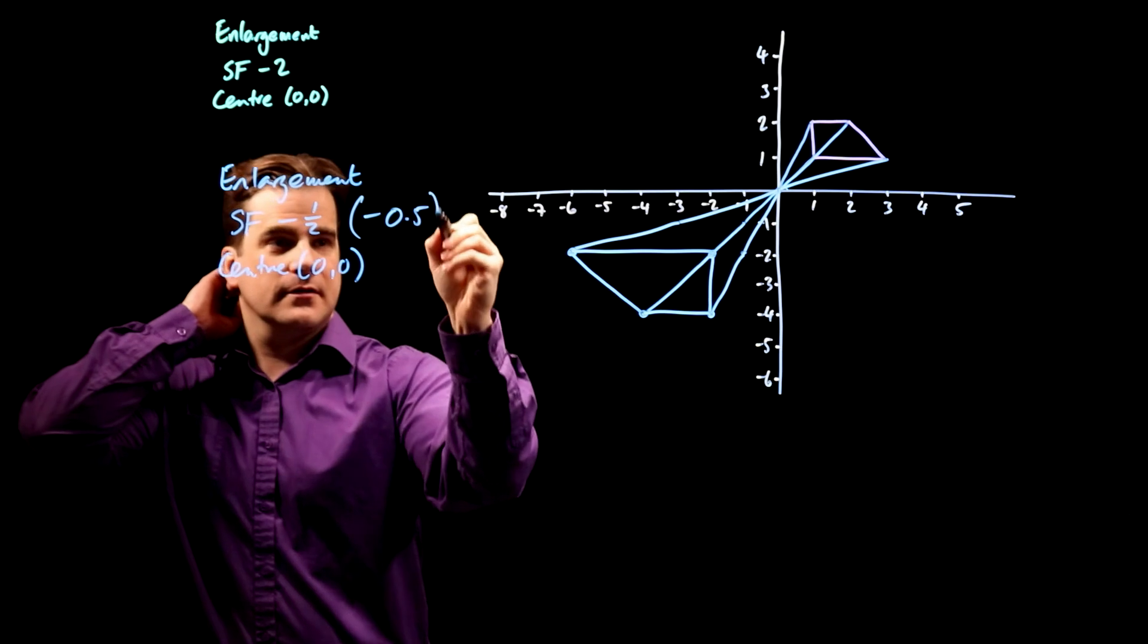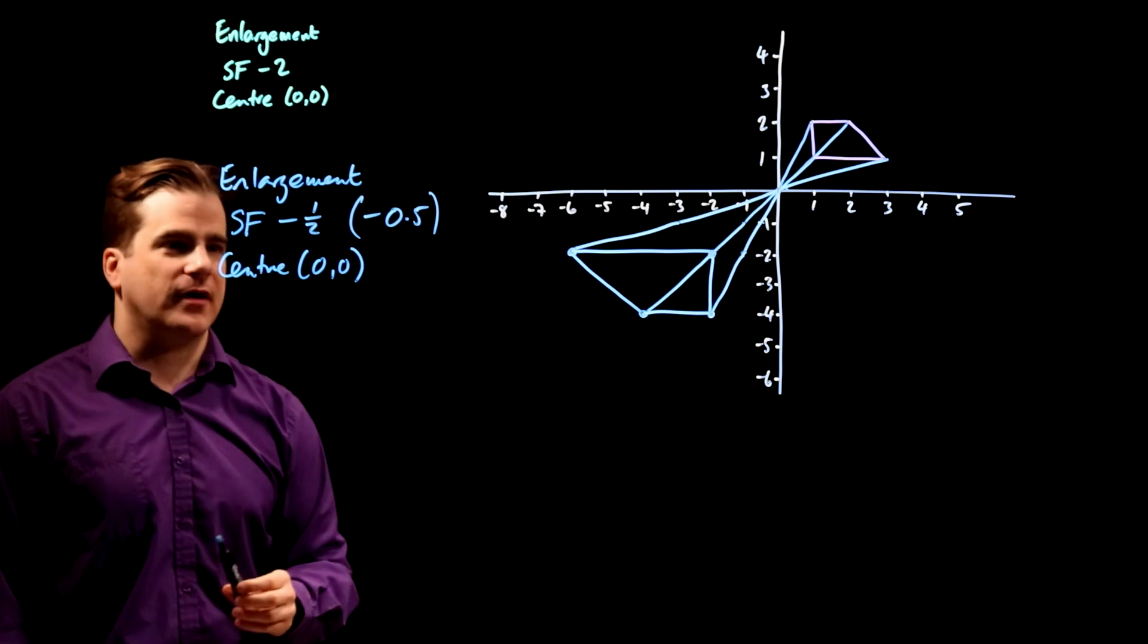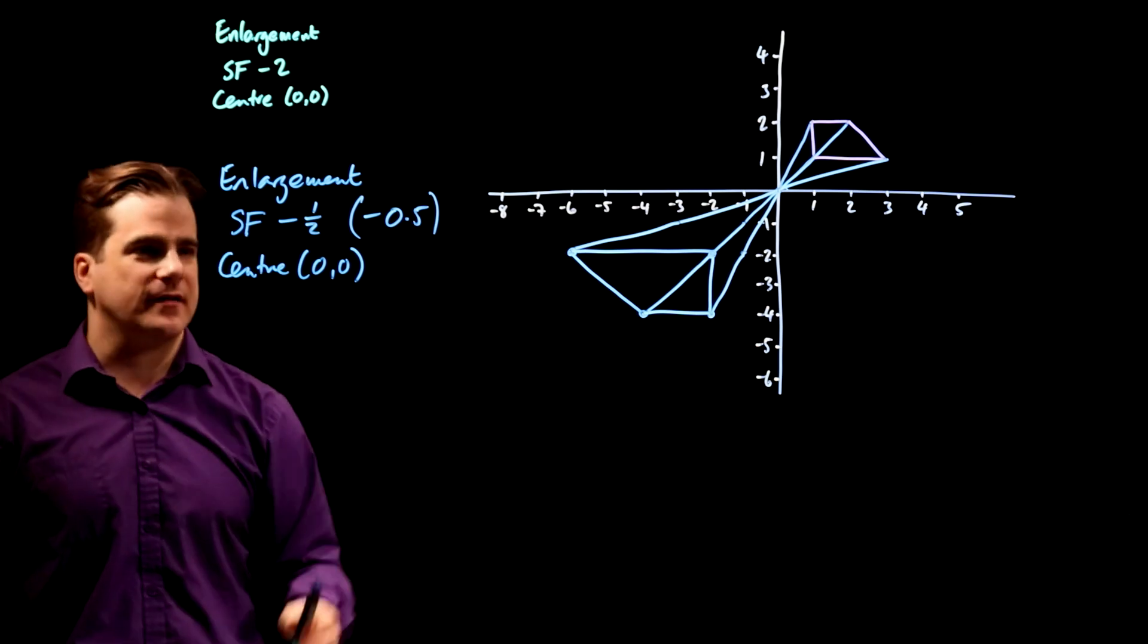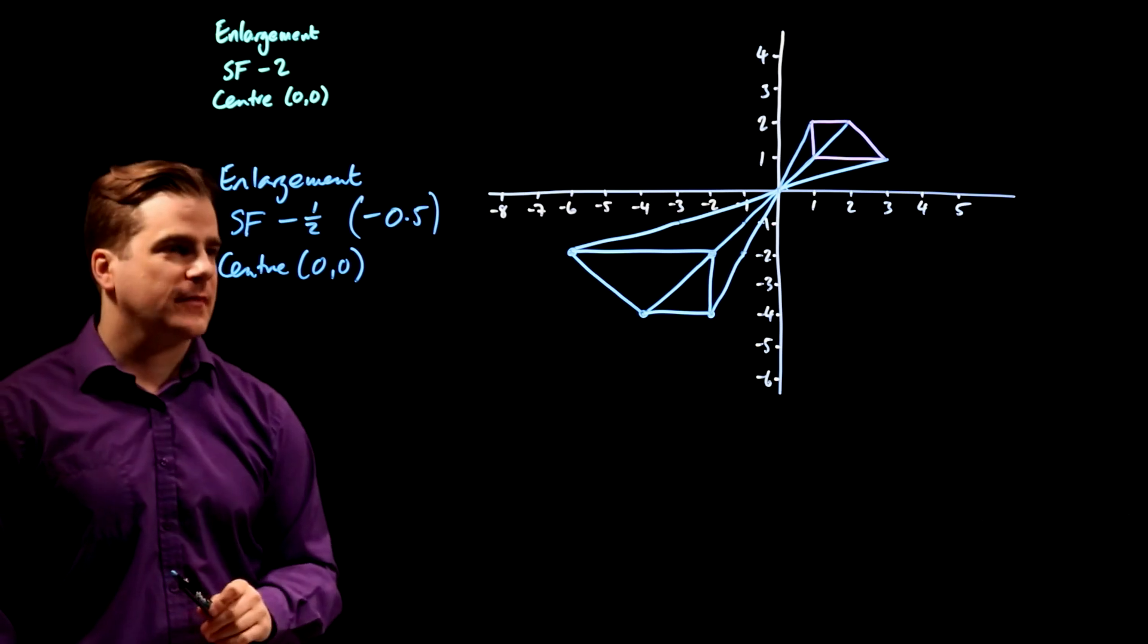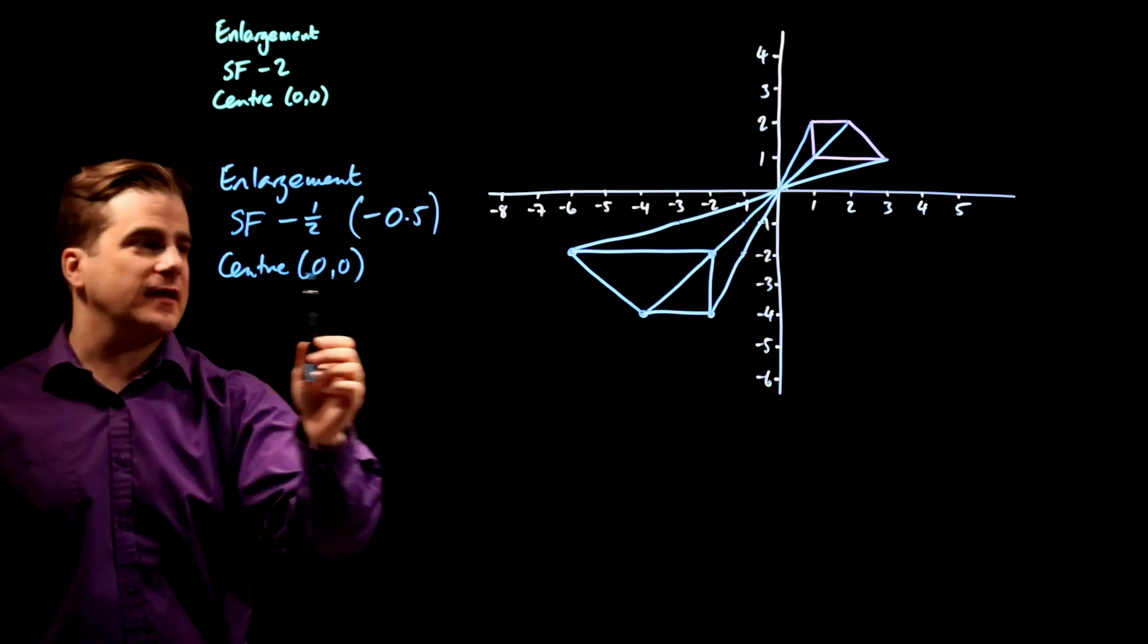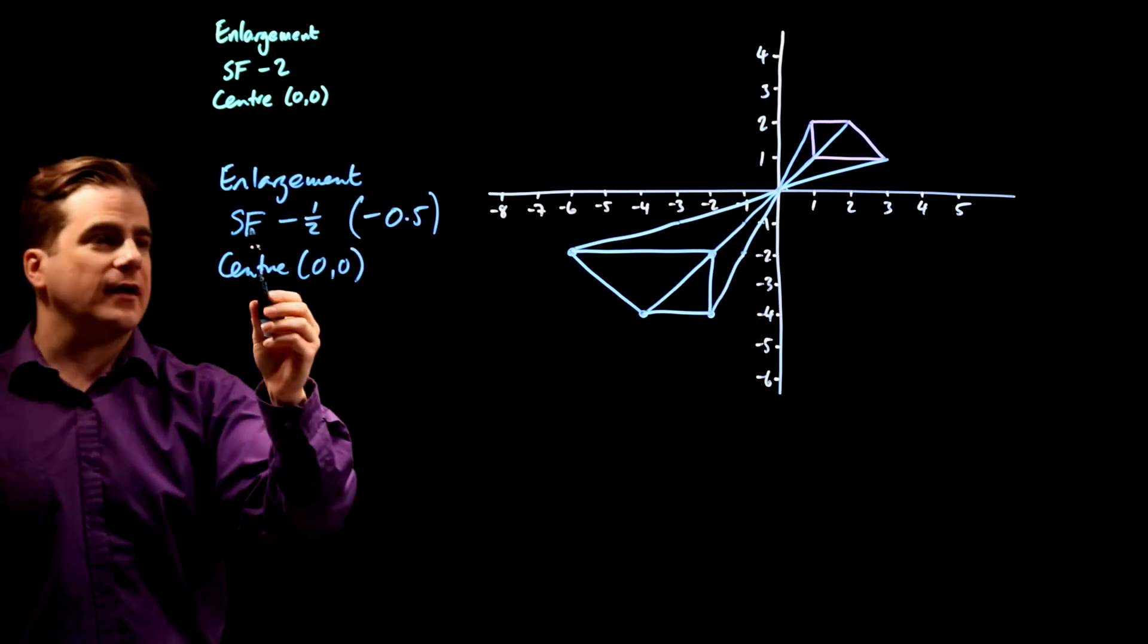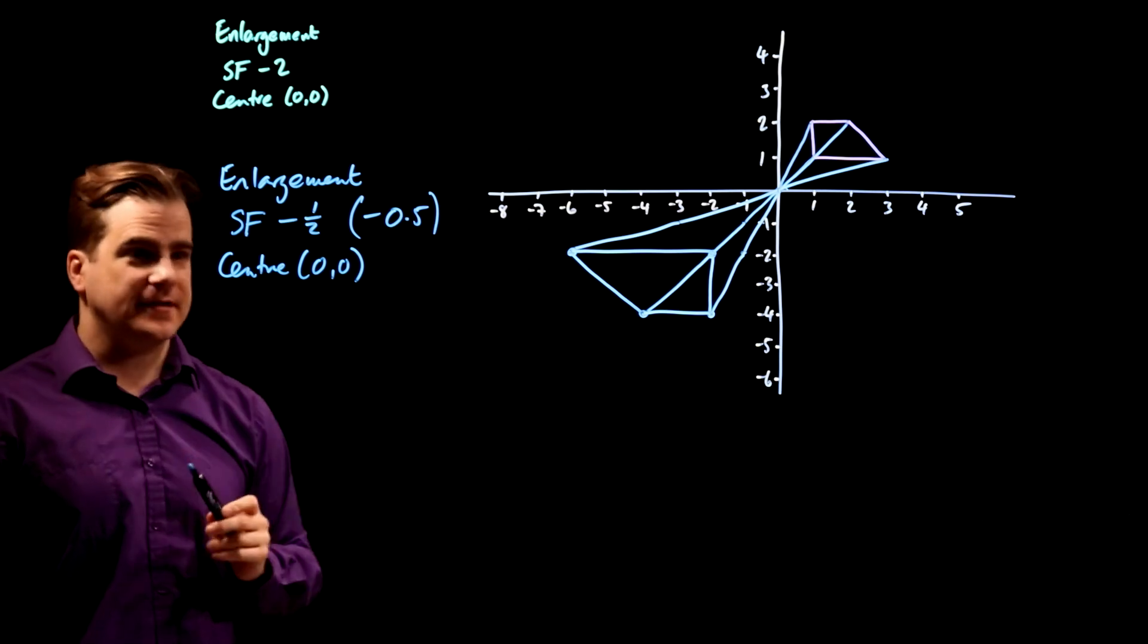It doesn't really matter which one you write. Maybe minus 0.5 is better. It doesn't matter. It's a half anyway, negative a half. And that's it. So going from there to there is an enlargement, center (0,0), scale factor minus a half.